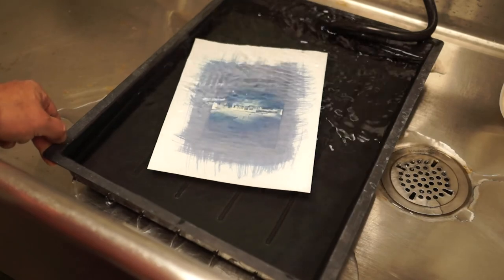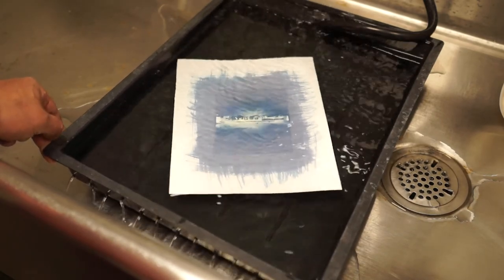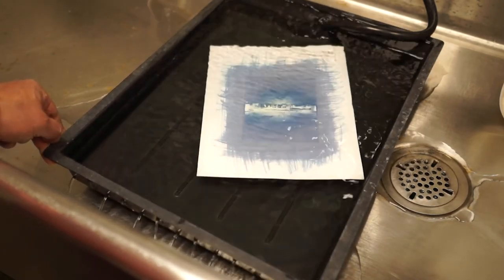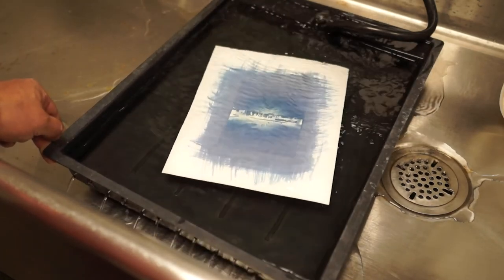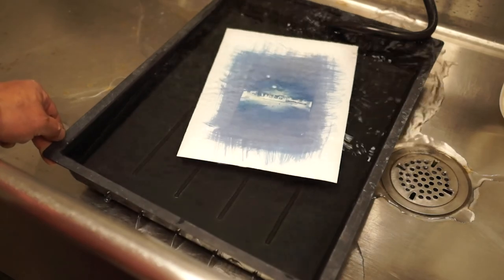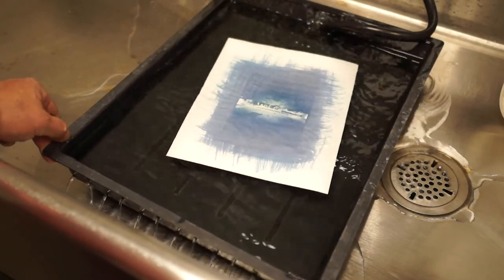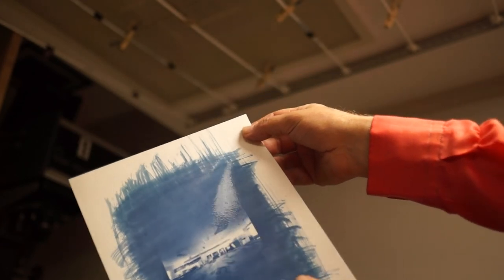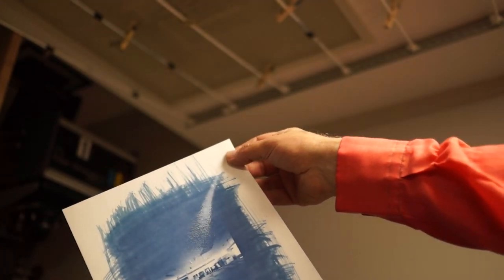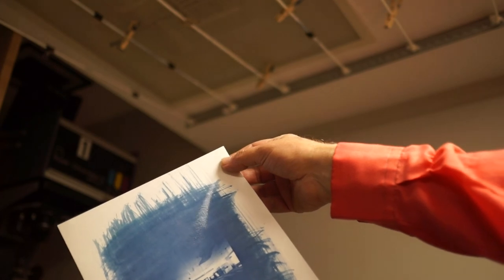Usually you want to wash them depending on how thick the paper is. Thicker paper you want to wash for a couple minutes. This is fairly thin bristle paper, so about one minute's correct. If you wash it too much, the image is going to bleach out. This is done washing when the blue is fairly even in the border and the clear area of the negative.